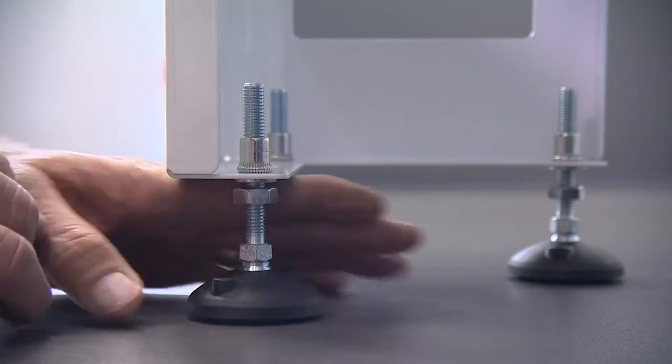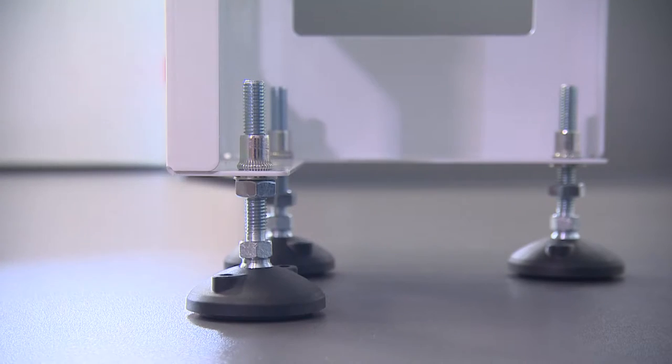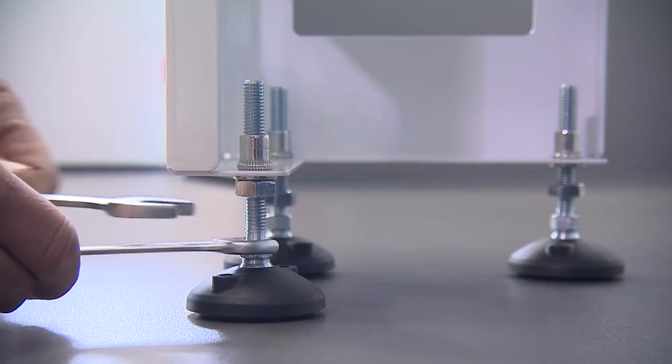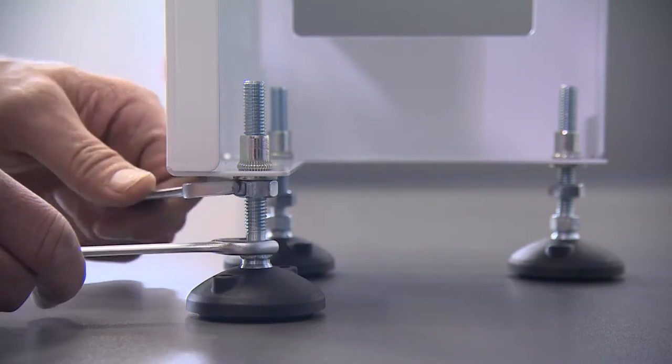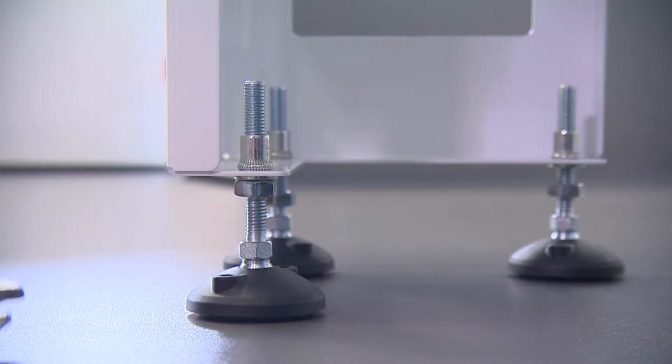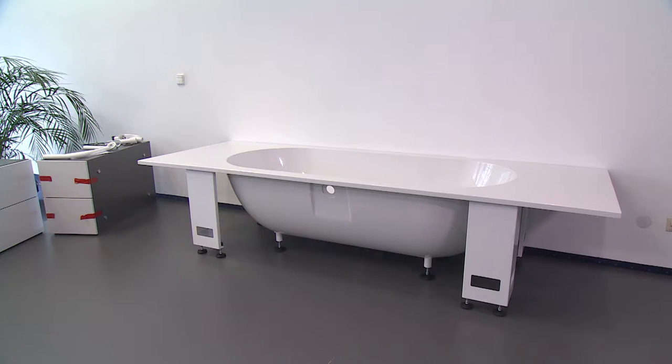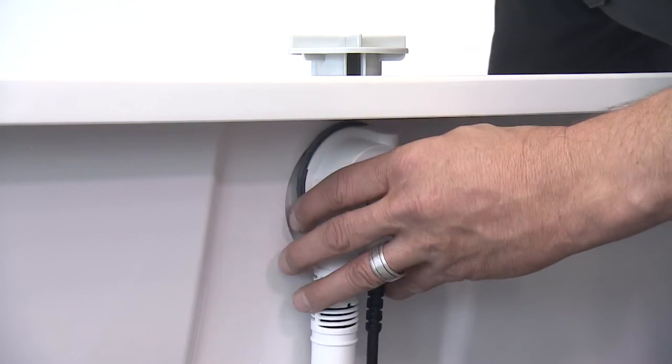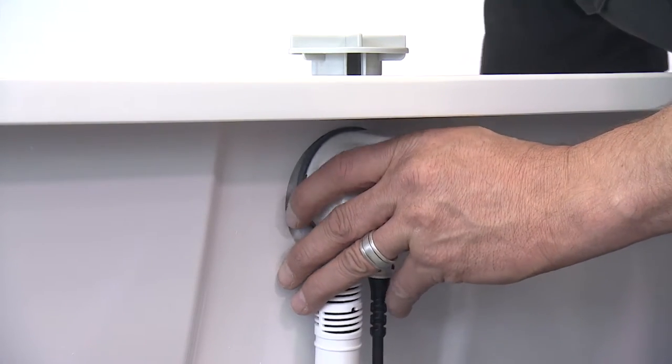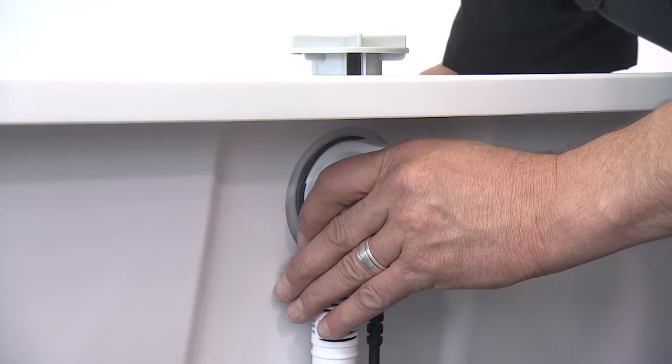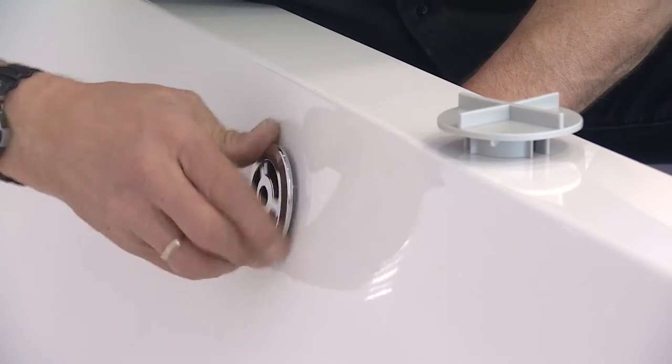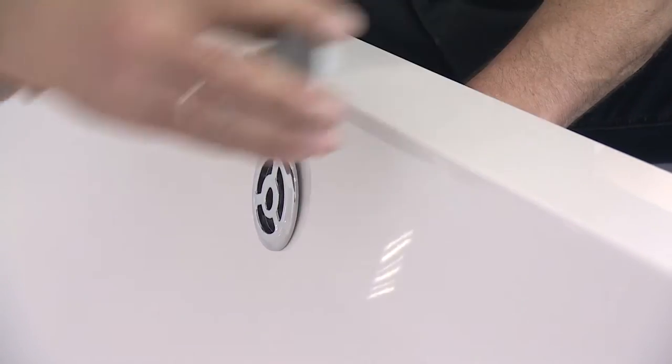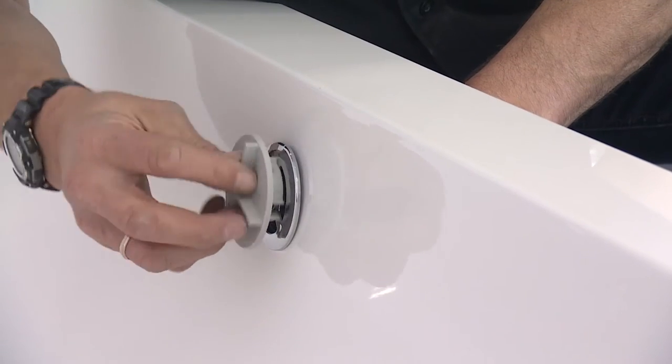Adjust the feet and tighten the nuts to lock them in position. Now you have installed the frames, you can proceed to install the drain and overflow fittings. Use the key to attach the overflow valve and then fit the operating handle.